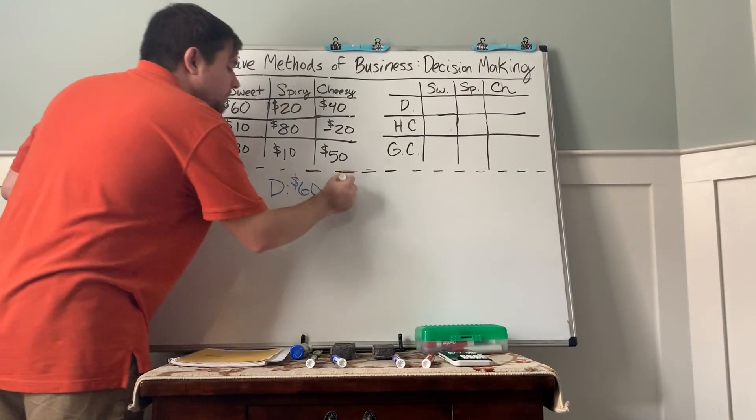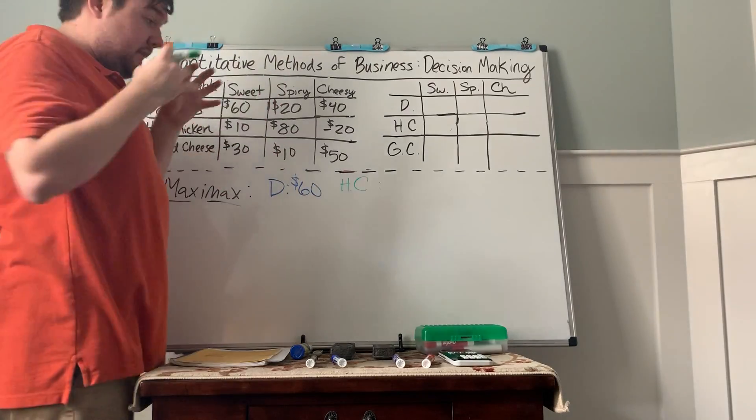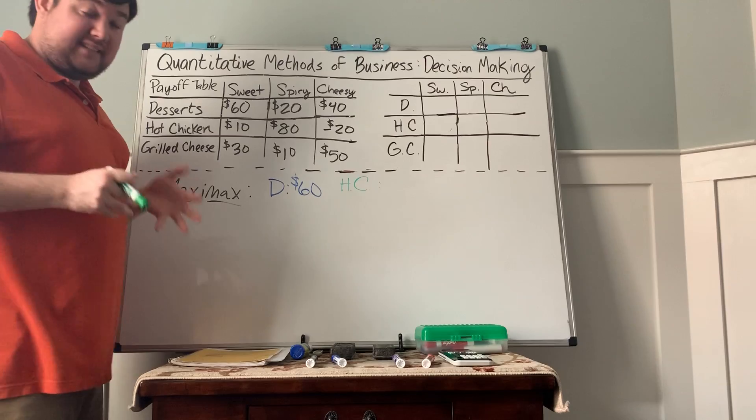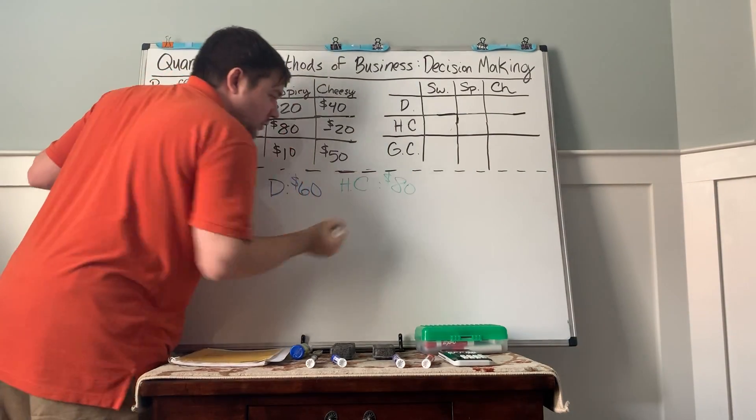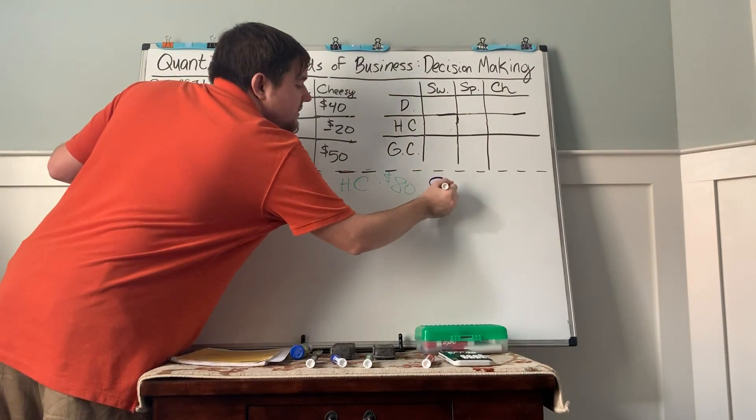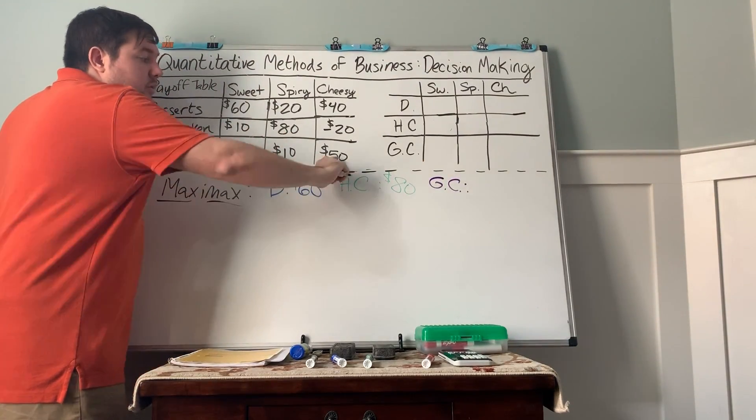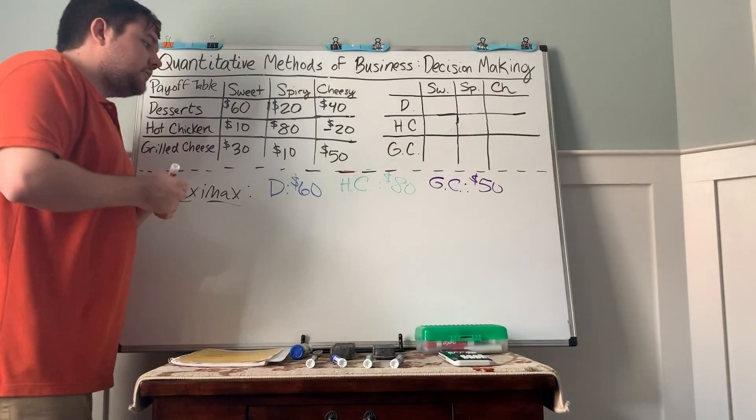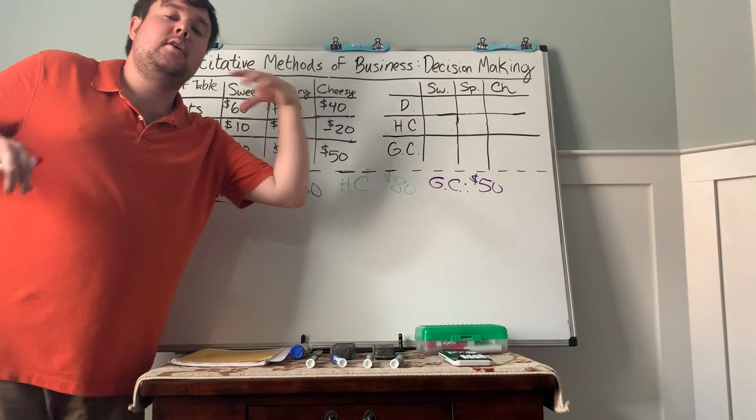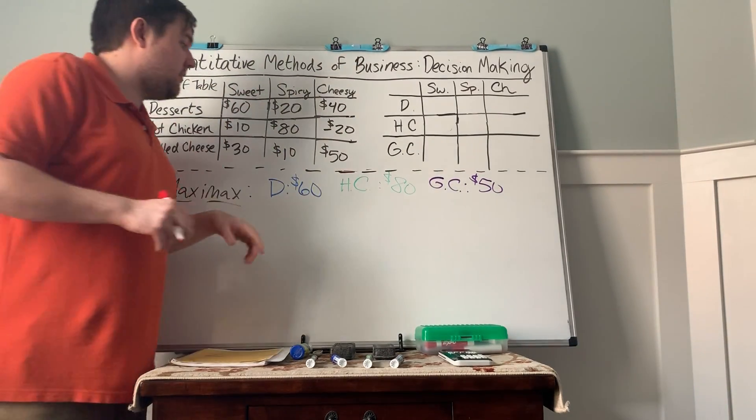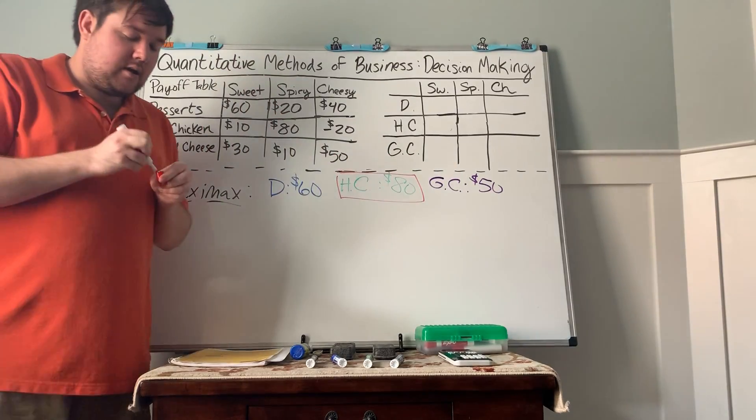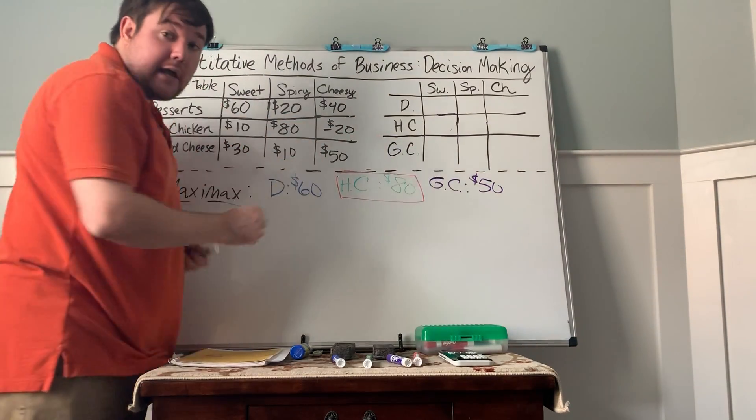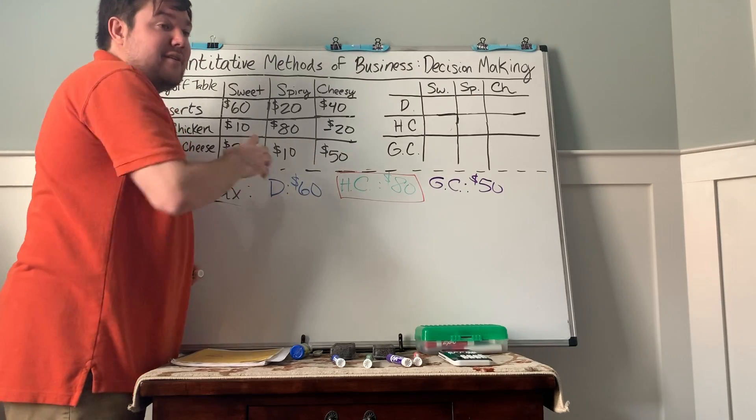Now we jump over to hot chicken. If we end up going with hot chicken, what's the best case scenario? Obviously 80,000 in the spicy state of nature is going to be our best bet. Our last business decision, the grilled cheese, the biggest number here is the $50,000. So we've got 60, 80, 50. We want the biggest payoff because we have a max here. In that case, we want to go with the hot chicken rationale for $80,000. This one's commonly referred to as the most optimistic because we're talking about the best case scenario in all of these.